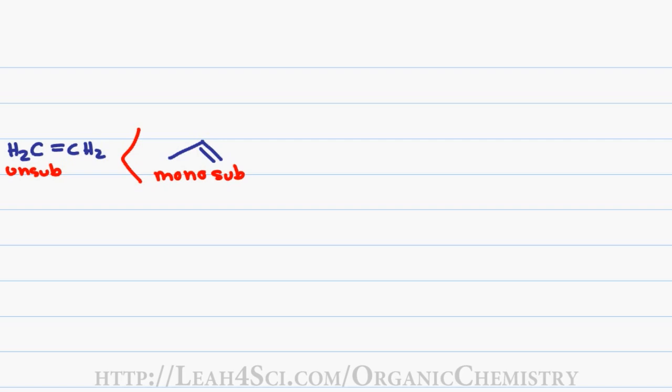Next we have a monosubstituted alkene where you have just one carbon coming off of that pi bond. Next we have a disubstituted alkene, and this can show up in three different forms. You can have a cis alkene which has two R groups on either side of the pi bond but they're facing the same direction. You can have a trans alkene where the two R groups are facing opposite directions, and then you can have a pi bond that has both substituents on the same sp2 carbon. All three of these are considered disubstituted alkenes and their stability is relatively close, so we'll group them together.